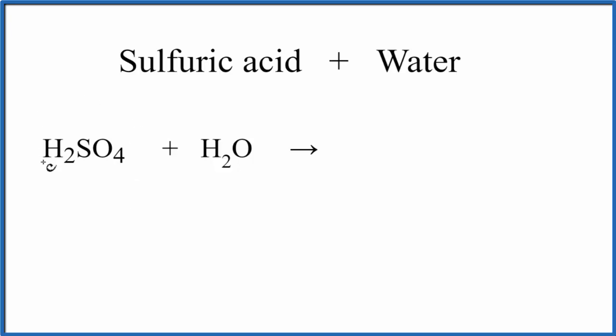So H2SO4 is a strong acid. It'll dissociate completely in water. The first reaction that happens is H2SO4 plus H2O, that gives us HSO4-, and you can see it lost one of the hydrogens.